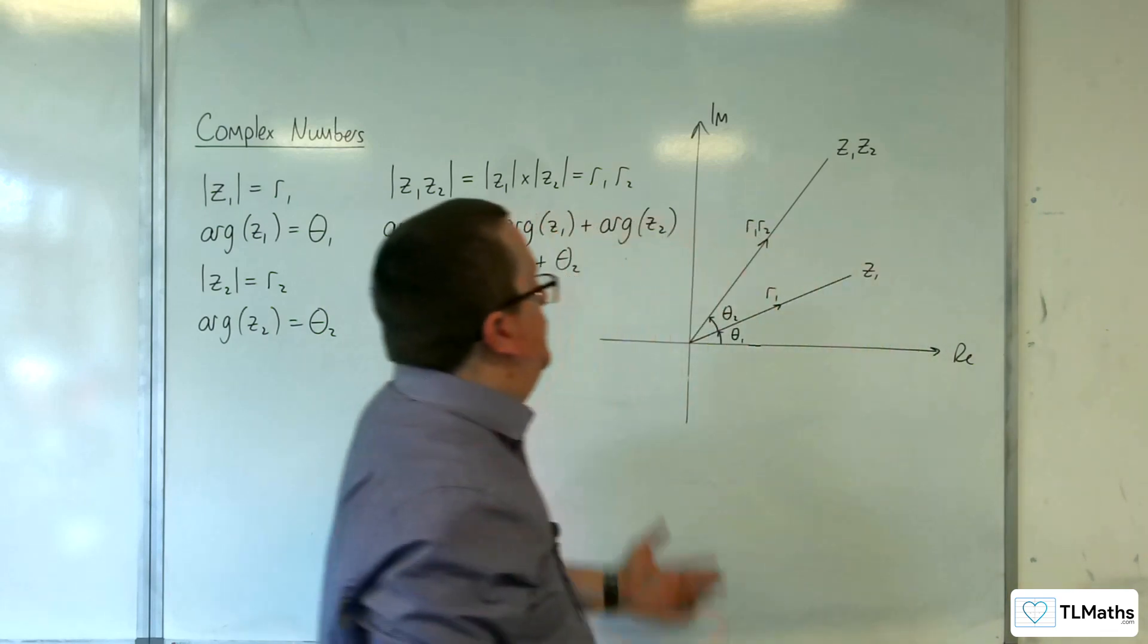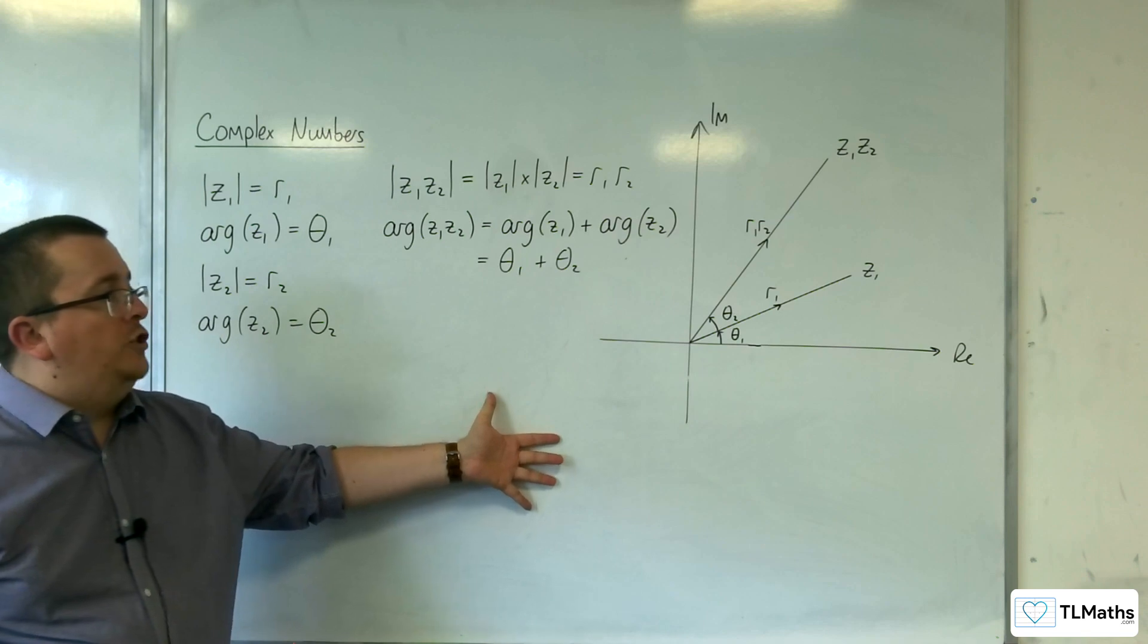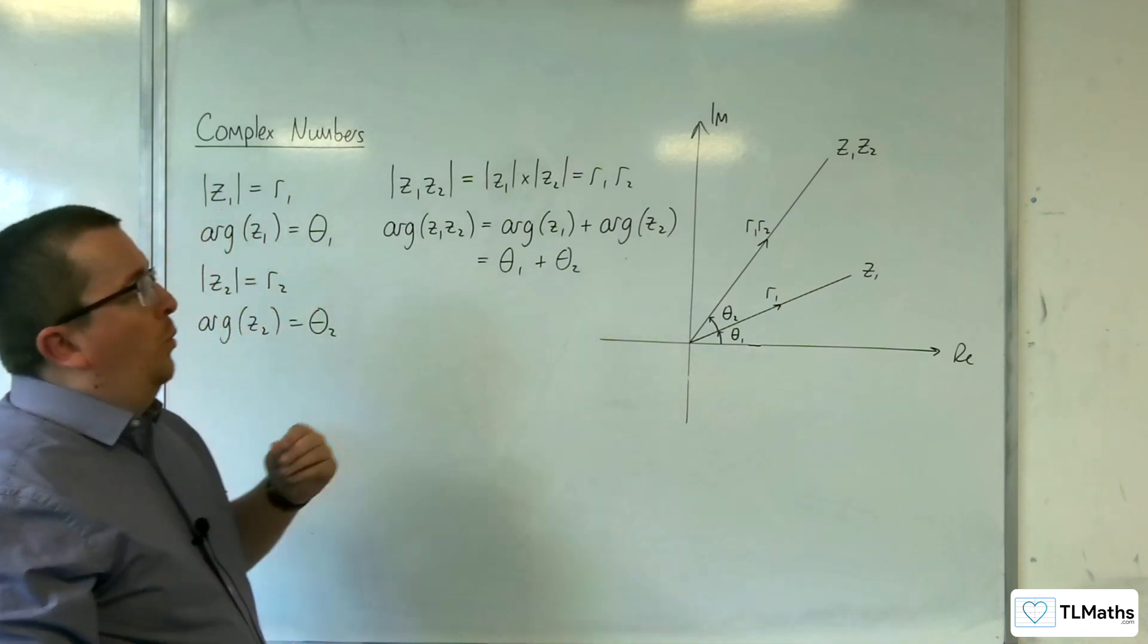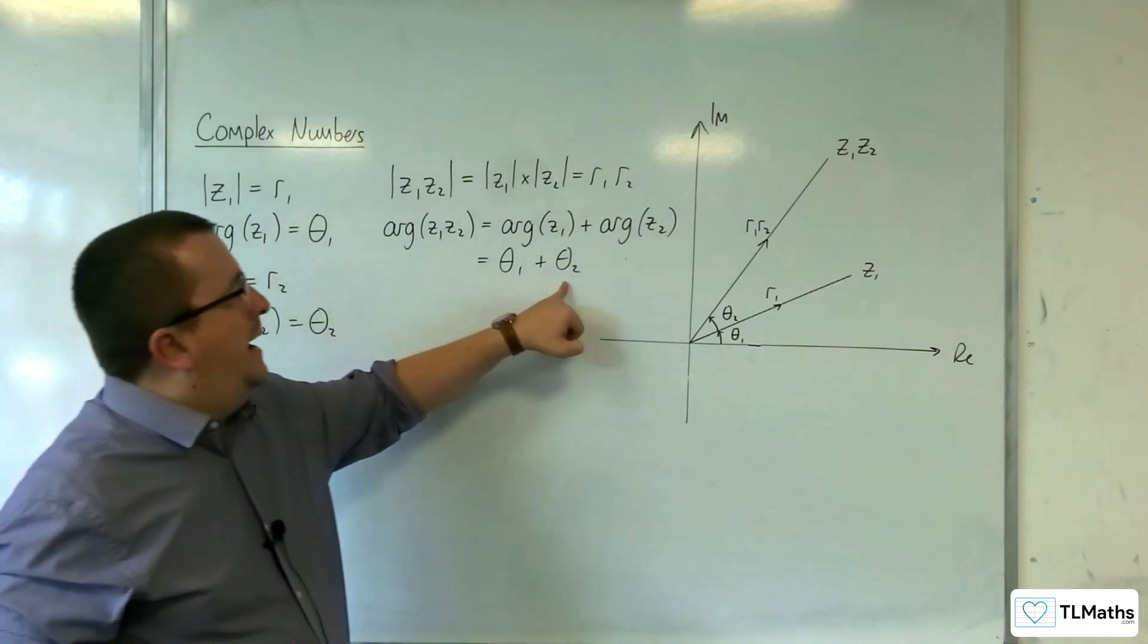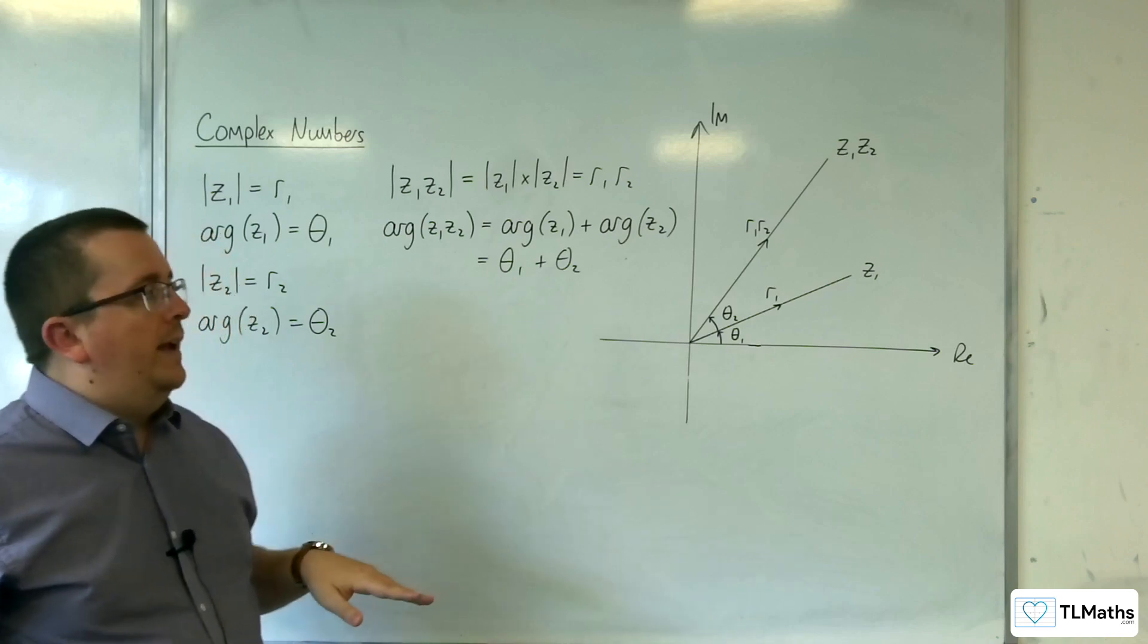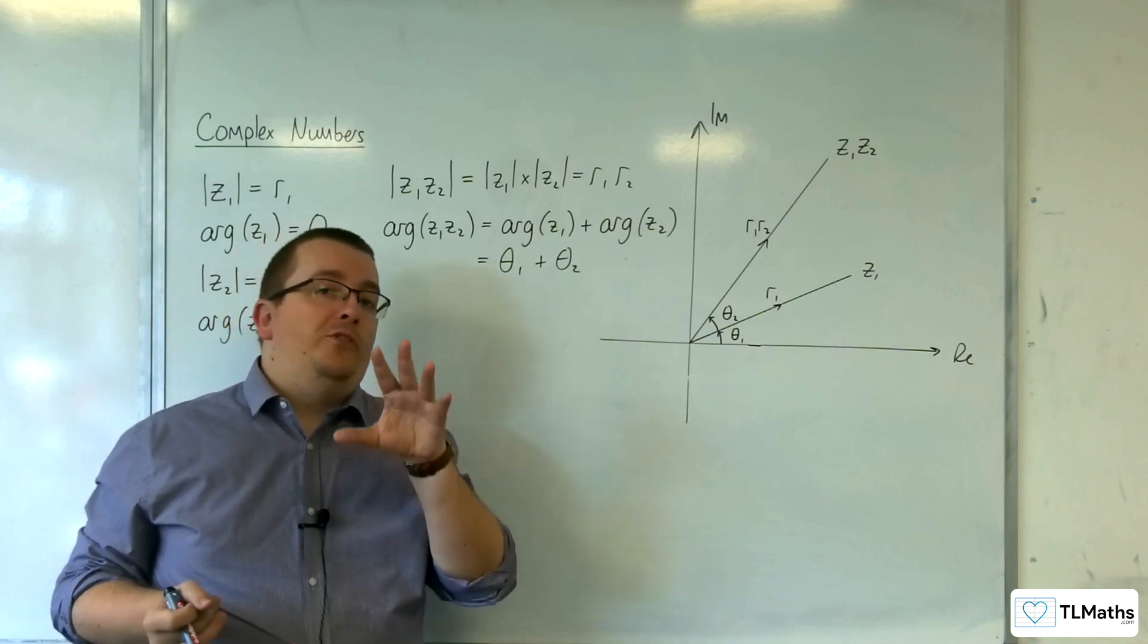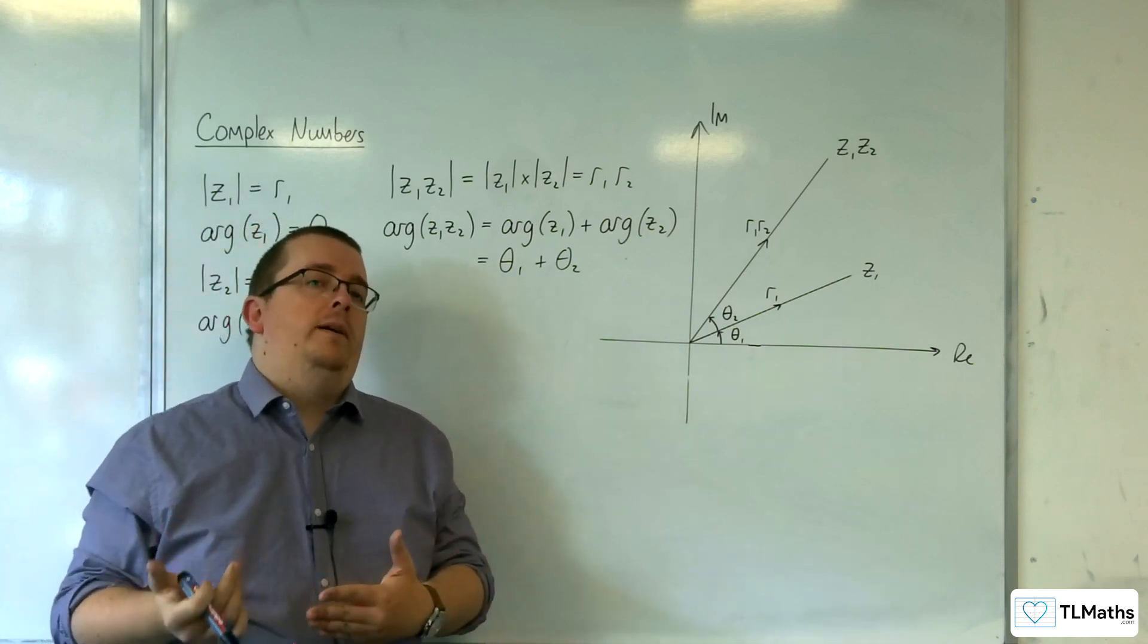Now, these rotate round anticlockwise as you multiply. And you also need to consider the argument that you get here, theta 1 plus theta 2. Depending on which ones you get, you want to make sure that your answer is what's referred to as the principal argument, which is between minus pi and pi.